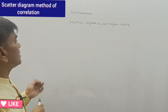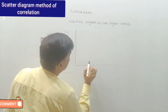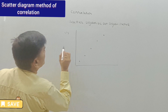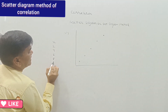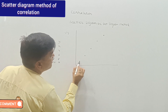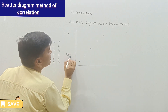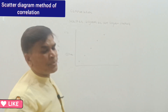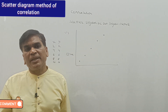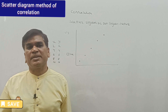So, scatter diagram — perfect positive correlation. Suppose we are plotting x series as 1, 2, 3, 4, 5 and x series values as 2, 4, 6, 8, 10, and y series is also 2, 4, 6, 8, 10. So then our plot will show a straight line going upward. We will say it is a perfect positive correlation. The graph is positive and the dots of x and y are equal, so we call it perfect positive correlation.